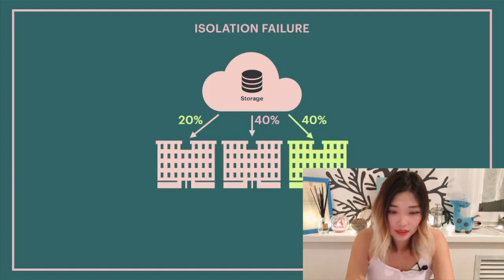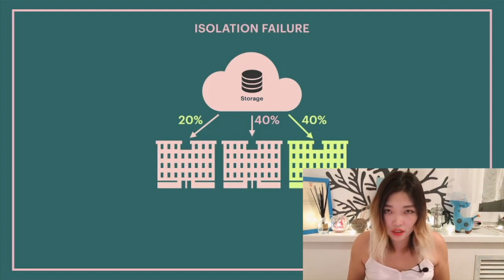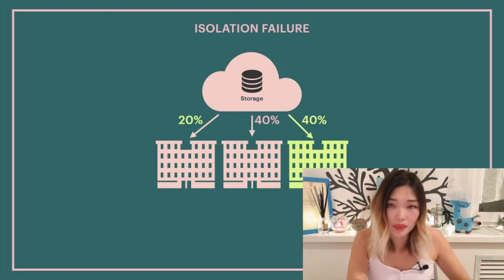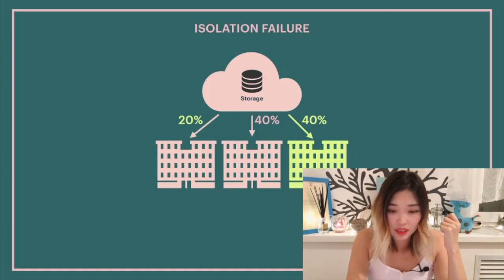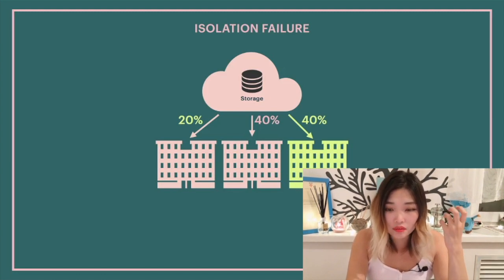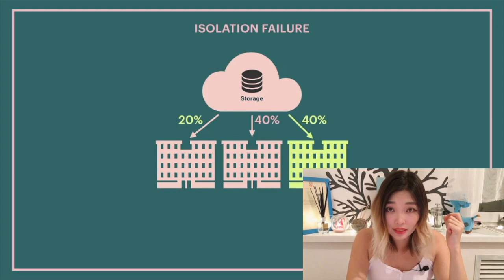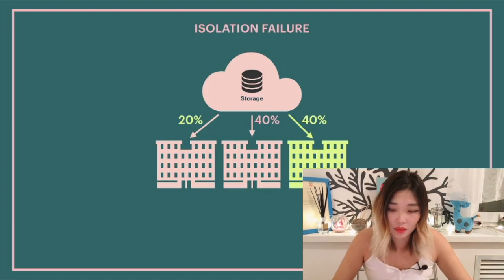When reallocating resources, attackers may take advantage of shared information — for example, by analyzing shared routing tables to map the internal network topology while preparing for an attack. The best control would be to use a private cloud, but if not affordable, the organization should request the CSP's technical details for the resource reallocation process and review it to ensure alignment with company requirements. It should also be specified in the contract who is allowed to access company data, including specific CSP employees with their roles and any potential external parties.